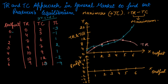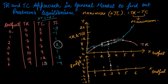Now we draw tangents on both the TR and TC curves. The maximum difference we get is at 3 units, which gives a profit of 2 rupees. So the maximum profit is at output 3. Now let's plot the profit curve: at 0 it is minus 3, at 1 it is minus 1, at 2 it is 1, at 3 it is 2 — that is the maximum — at 4 it is 1, at 5 it is minus 2, and at 6 it is minus 4.